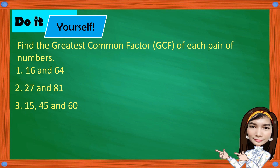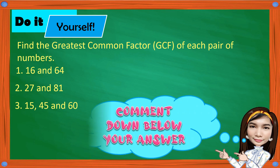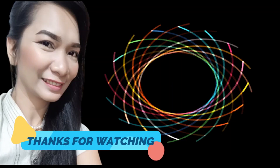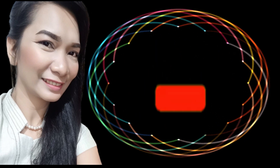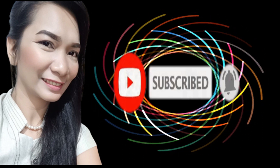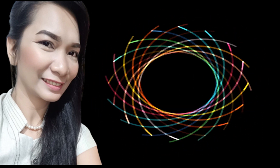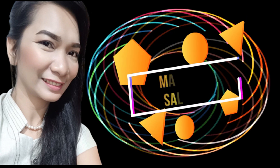Now it's your turn. Let's see if you learned something from this video. Do it yourself: find the greatest common factor or GCF of each pair of numbers. First, 16 and 64. Next, 27 and 81. Third, 15, 45, and 60. Don't forget to comment down below your answer. Happy learning! Thanks for watching! Please like and share! And don't forget to subscribe to my channel and click the bell button so that you will be notified whenever I upload a new one. Maraming salamat!